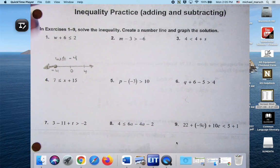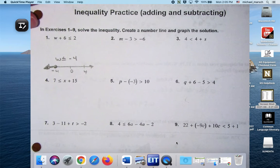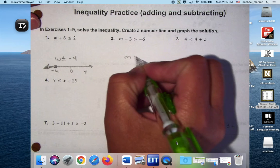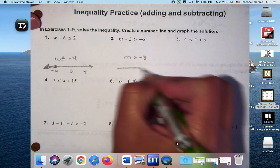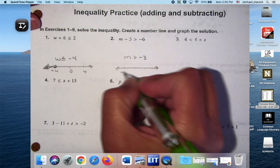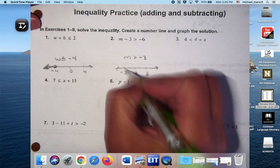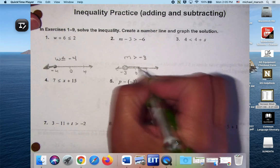I'm just going to keep going until someone raises their hand and flags me down. Number 2, M is greater than negative 3. So I'd be open and going to the right.